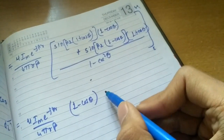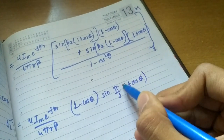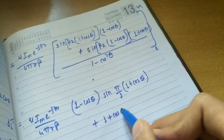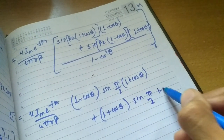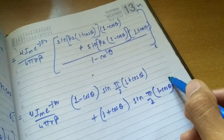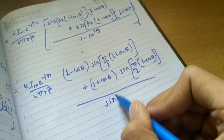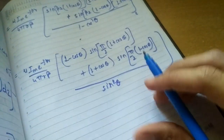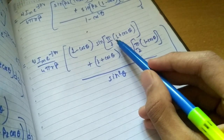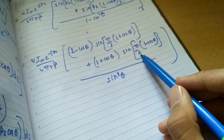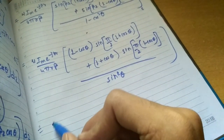Let's write cos theta on the left side. Over here also, (1 plus cos theta) first, and then sine of pi by 2 into (1 minus cos theta). This is all in the sine term only, and the denominator has sin squared theta, because 1 minus cos squared is sin squared. Now we know this property: sine of pi by 2 plus (pi by 2) cos theta — if we give pi by 2 separately — it is nothing but cosine. So over here also we get cos of (pi by 2 cos theta).